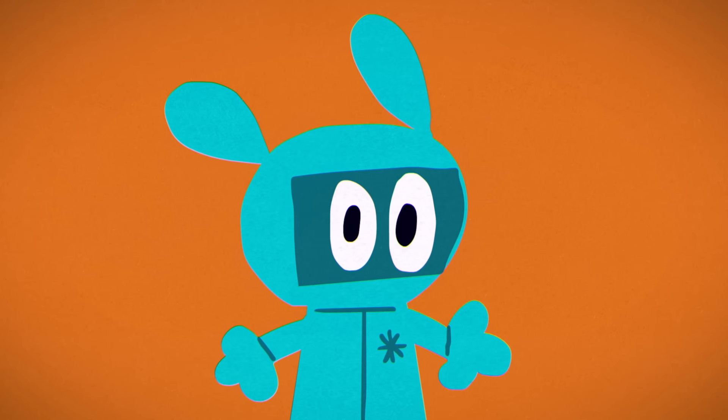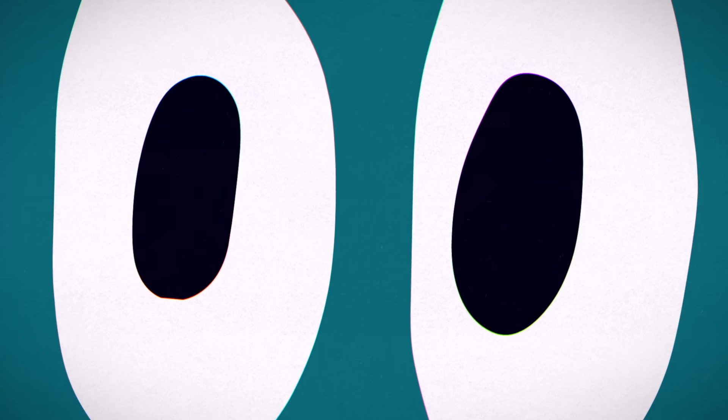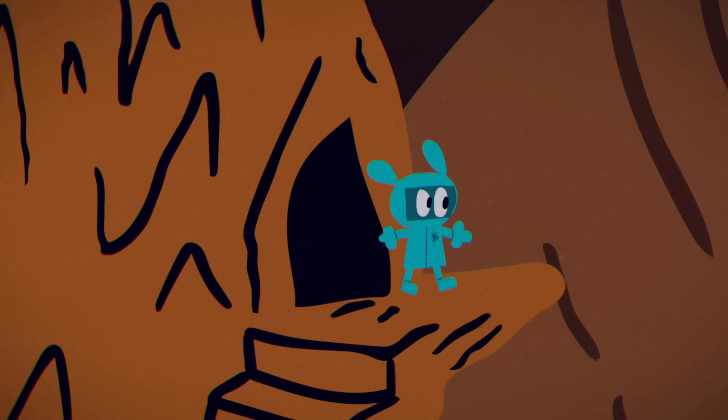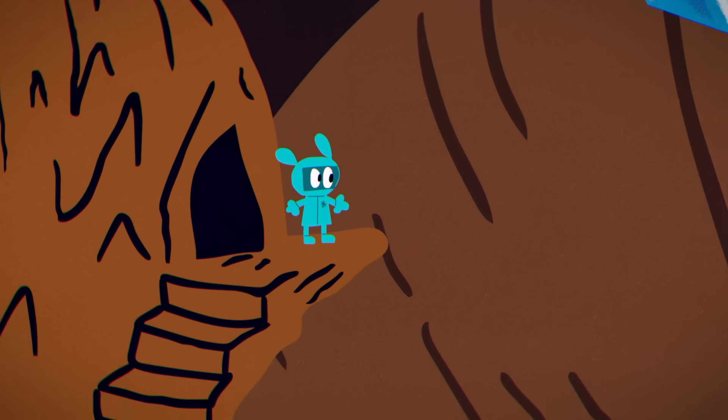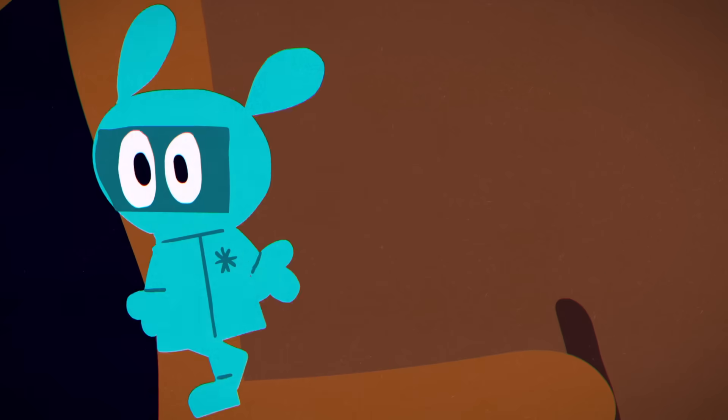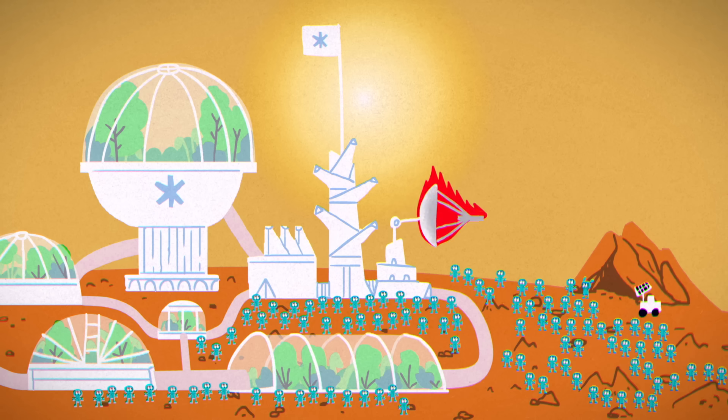Today is the one-year anniversary of the best worst day of your life. The best part was discovering a subterranean city on Mars— the first evidence of intelligent alien life ever found. The worst part? No one got to explore it, because that was when you lost contact with Earth.